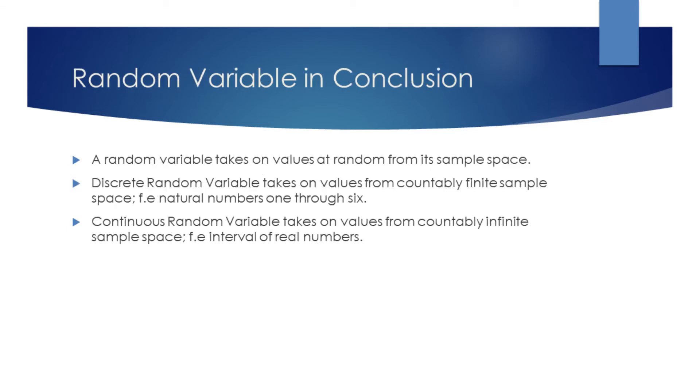In short, the random variable assumes values from its sample space at random. If the sample space of the variable is countably finite, like in the example of the dice, it is said to be a discrete random variable. If the sample space of the variable is countably infinite, like an interval of real numbers, it is said to be a continuous random variable.